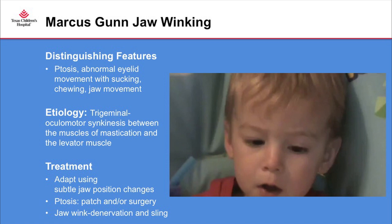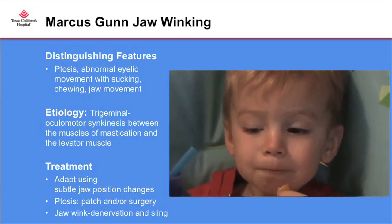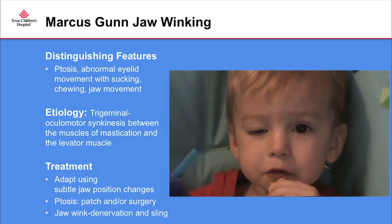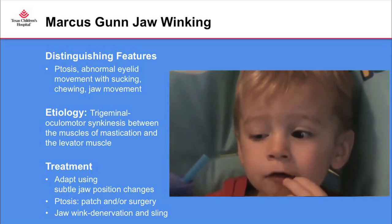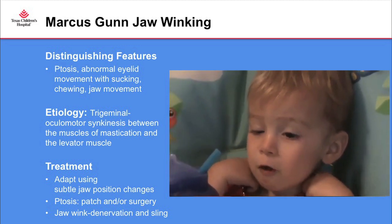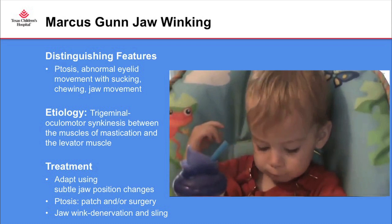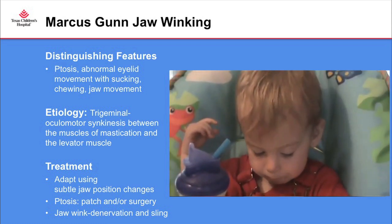Marcus Gunn jaw winking is not really a problem of eye alignment, but anytime parents come in with vague complaints that there's just something wrong with my baby's eyes, or something funny happens when they're eating, I think of Marcus Gunn jaw winking. As the baby is eating you can see abnormal movements, so as a parent it can be hard to describe — you can see how they might say 'there's just something wrong with my baby's eyes.' The etiology is trigeminal and oculomotor synkinesis between the muscles of mastication and the levator, which controls the eyelid. These patients often adapt with jaw positioning.